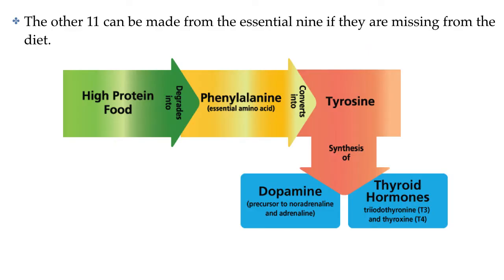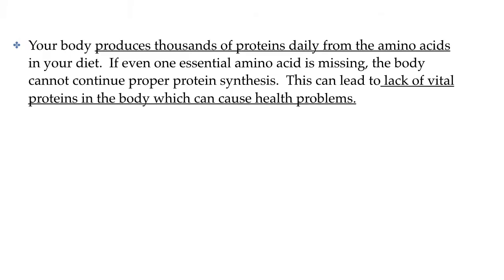For most people, most of the time, there are 11 non-essential amino acids that can be made from the nine that are essential. It is extremely important that we get those nine different essential amino acids in our diet because we are building thousands of different proteins every day. If even one of the essential amino acids is missing, we may not be able to make the proteins we need to be healthy.